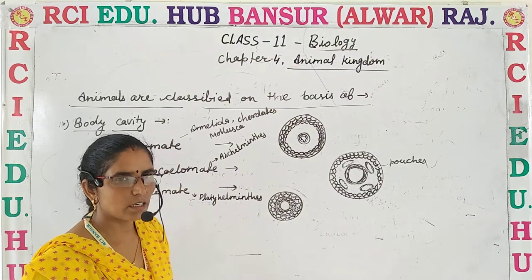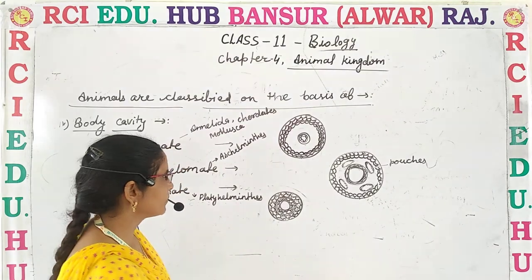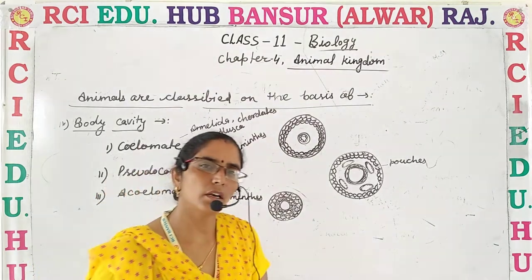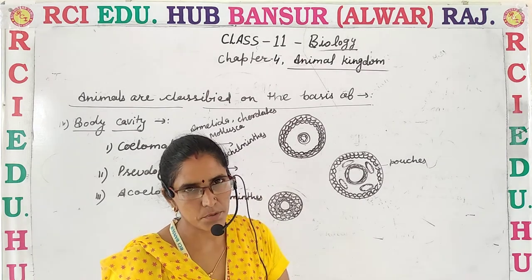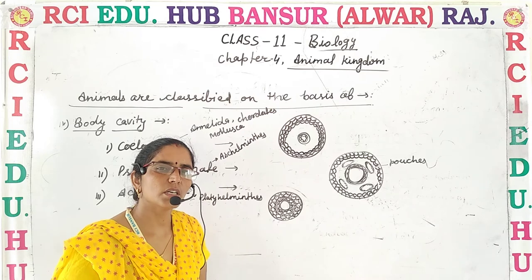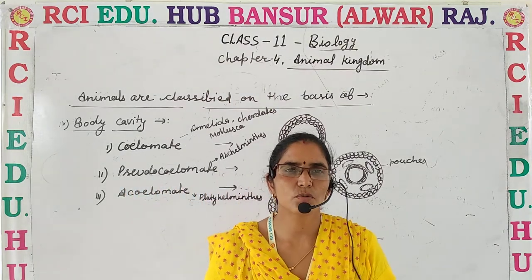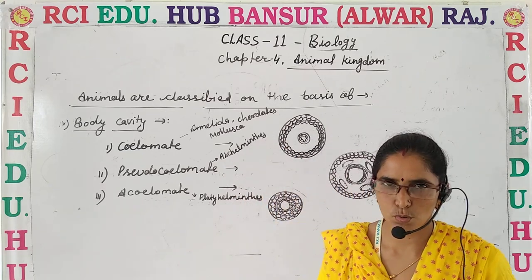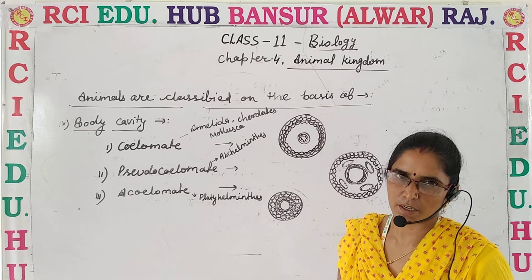After that we discussed about symmetry — that is, when the body is divided or maybe not divided into two equal halves. On the basis of that, organisms are symmetrical or asymmetrical. The organisms which are symmetrical are further divided into two types: radial symmetry and bilateral symmetry.